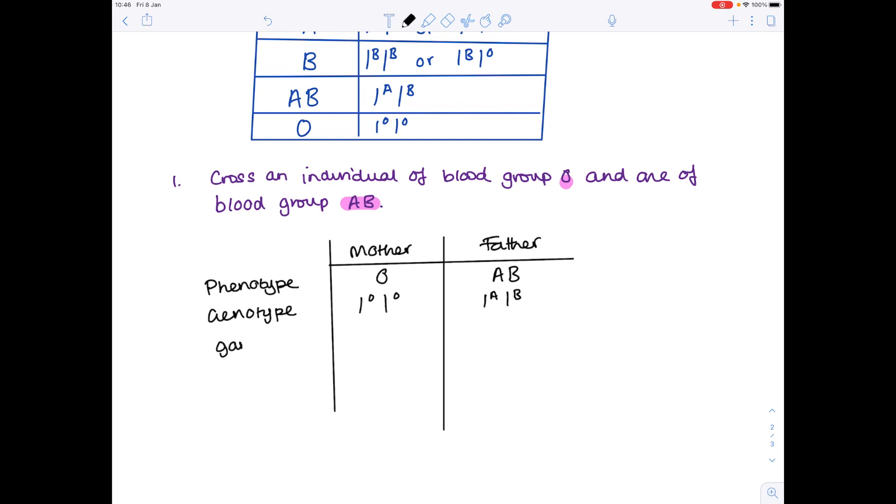So what are the potential gametes? Well all the mother's eggs will be IO. The father's sperm could either be IA or IB. Let's do a small Punnett square so we'll do the father on this side the mother on this side.